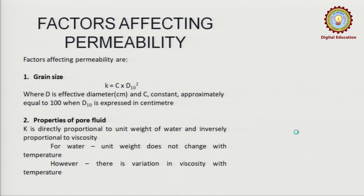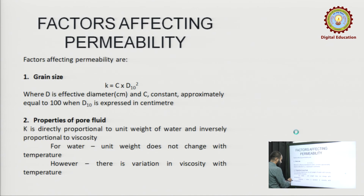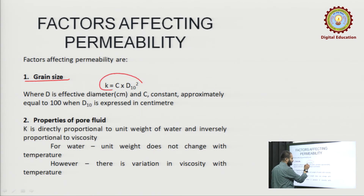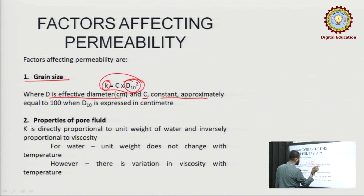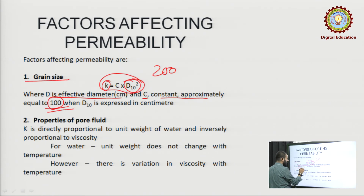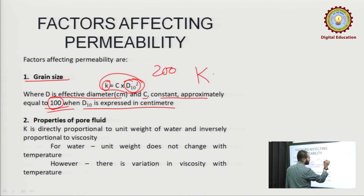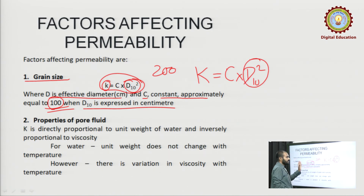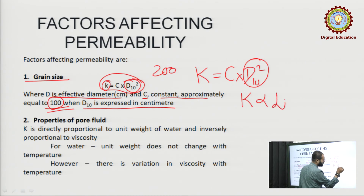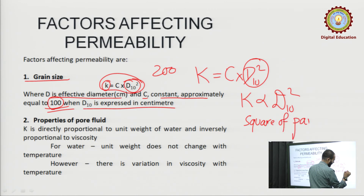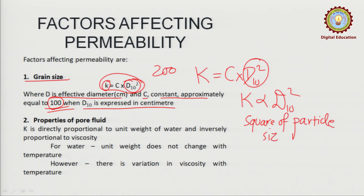Now, what are the factors affecting permeability? First, grain size. The formula is k = C × D10², where D10 is the effective diameter, C is a constant equal to approximately 100, and the unit is in centimeters. So k depends on particle size — permeability is directly proportional to the square of the effective diameter.